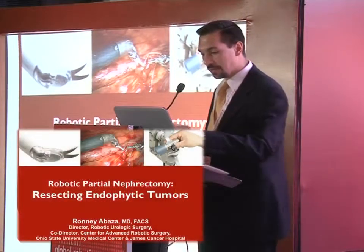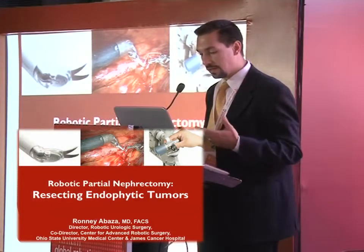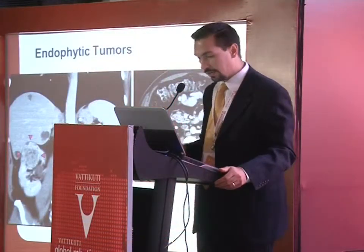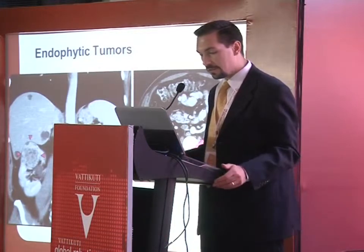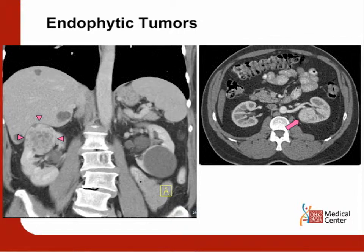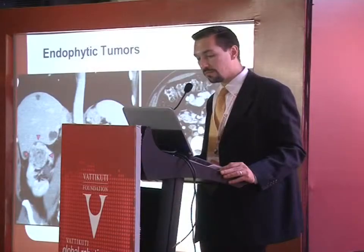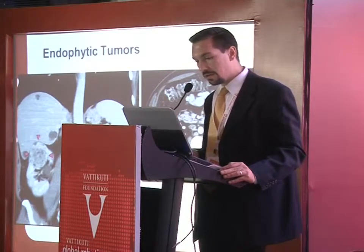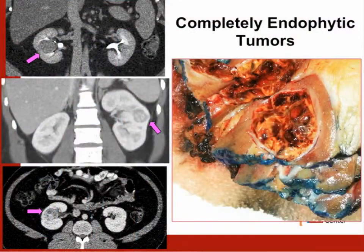We've seen a beautiful example of a partial nephrectomy by Dr. Gill today, and a couple of good talks giving details on how to do partial nephrectomies robotically and what the advantages are. My topic is specifically endophytic tumors. From personal experience starting with laparoscopic partial nephrectomy, endophytic tumors made me nervous, and I felt limited laparoscopically. Robotically, with time, I've become very comfortable doing these. There are partially endophytic tumors, and then there are completely endophytic tumors, which are really much more challenging.